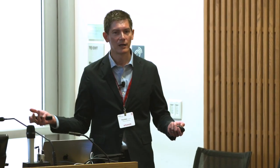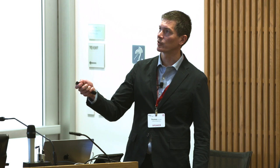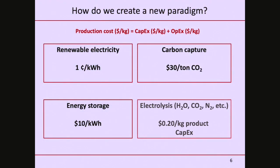Can we use this renewable electricity to do something differently? How do we create a new paradigm? You've got to compete against the economics — if you cannot sell your product at the same or lower price, it's really tough. Production cost per kilogram is a function of capital expenditures plus operational expenditures — CapEx and OpEx. There are four aggressive targets that, if we hit them, we can completely change the paradigm.